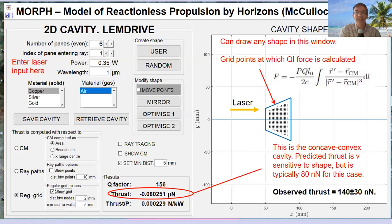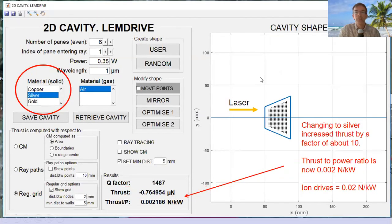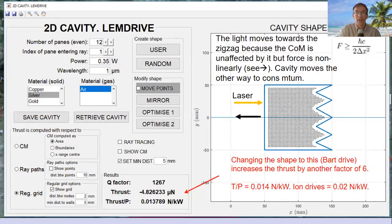The great thing about having a model is you can predict how you might enhance things. If we change the material to silver, that boosts the thrust by about a factor of 10. We now get 0.002 newtons per kilowatt. Ion drives are 0.02 newtons per kilowatt, so we need about a factor of 10 to compete with them.